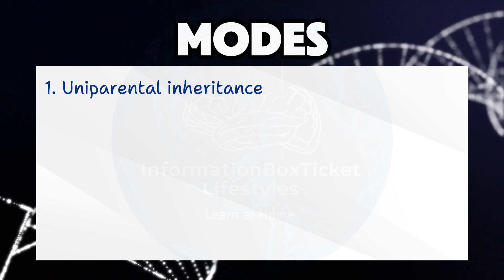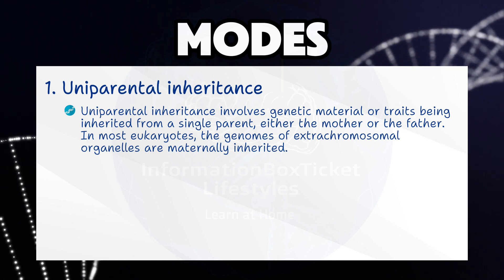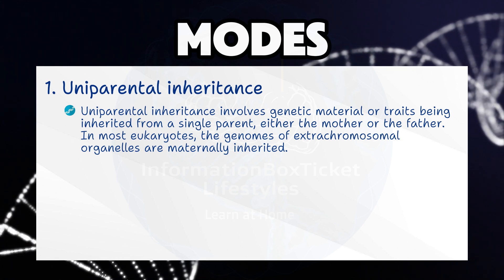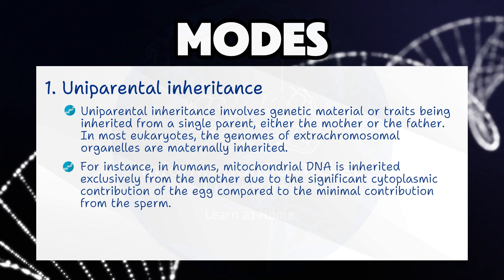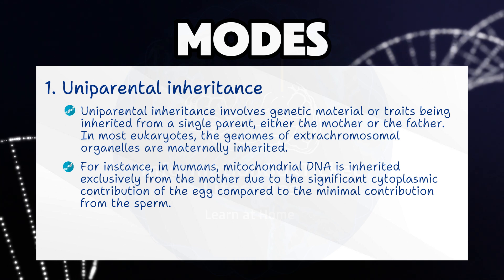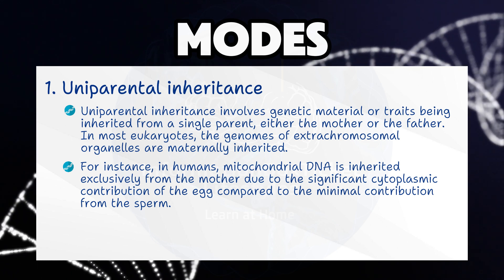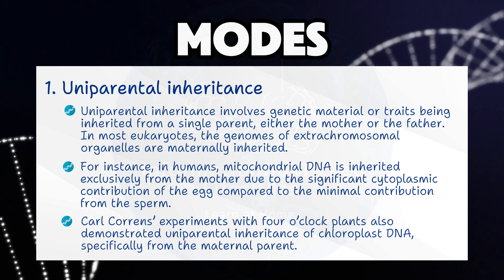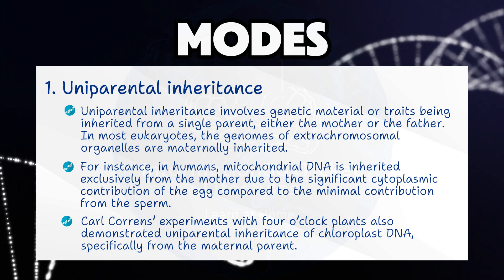Modes of Extra-Chromosomal Inheritance. Mode 1: Uniparental Inheritance. Uniparental inheritance involves genetic material or traits being inherited from a single parent, either the mother or the father. In most eukaryotes, the genomes of extra-chromosomal organelles are maternally inherited. For instance, in humans, mitochondrial DNA is inherited exclusively from the mother due to the significant cytoplasmic contribution of the egg compared to the minimal contribution from the sperm. Carl Koren's experiments with four o'clock plants also demonstrated uniparental inheritance of chloroplast DNA, specifically from the maternal parent.